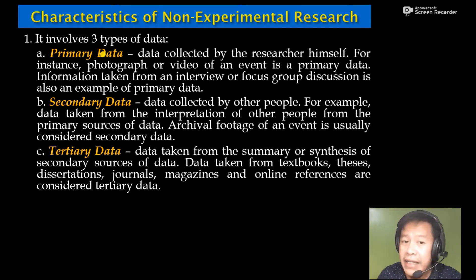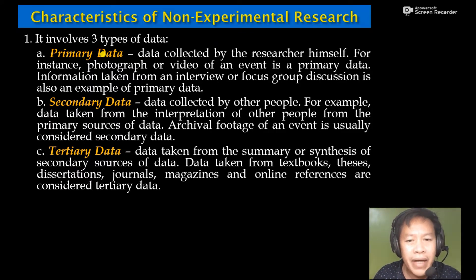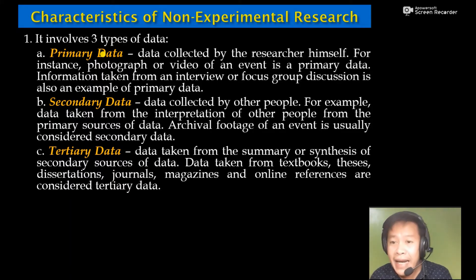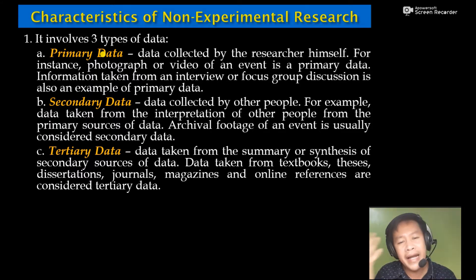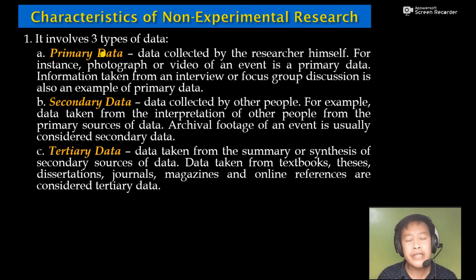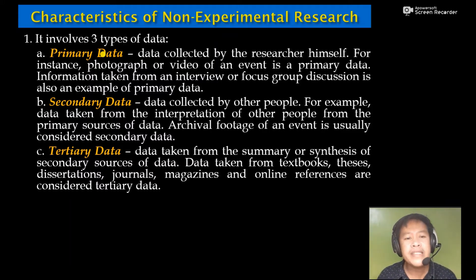Secondary data are data collected by other people — for instance, data taken from the interpretation of other people from primary sources. For example, if I conducted research about the cultures and traditions of Maguindanaon and the pictures I gathered are used by another researcher who did not personally take those pictures, then that information is secondary data — it is second-hand data.